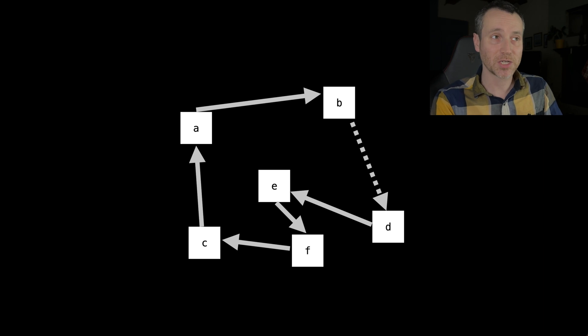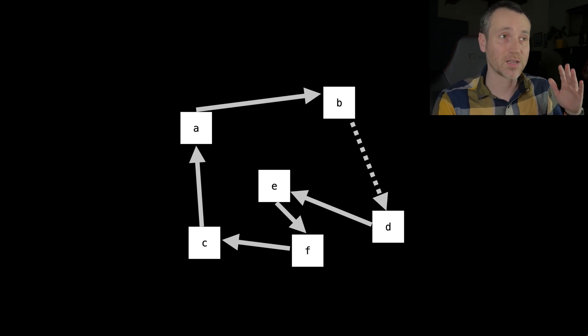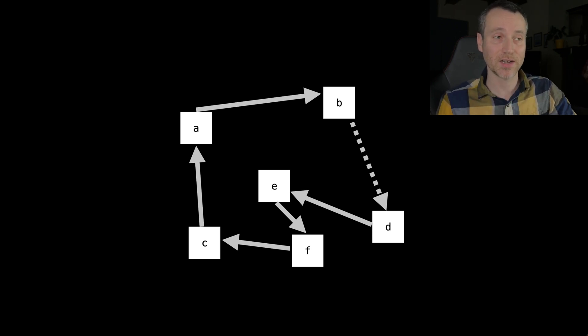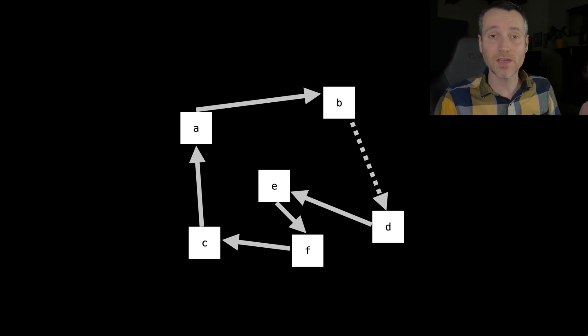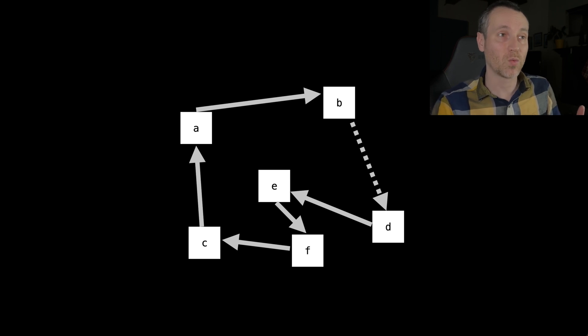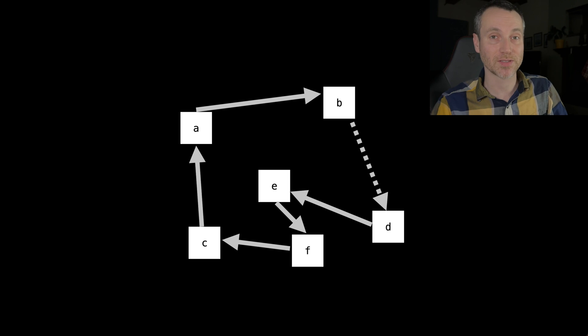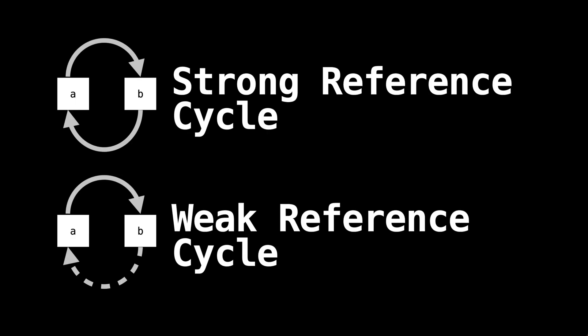Back to the same illustration, the only thing I've changed is that reference from B to D — B now has a dotted line arrow, so we don't have a strong reference to anything. The only thing I've changed is I've broken the strong reference cycle, where B points to D but with a weak reference. So you have the strong reference cycle versus the weak reference cycle.